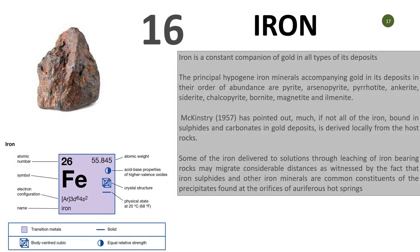Number sixteen is iron. Iron is everywhere and it is a must when you are prospecting for gold. There is a strong affinity between iron and gold-bearing deposits. Iron is a constant companion of gold in all types of deposits. The principal hypogene iron minerals accompanying gold in each deposit — in order of abundance — are pyrite, arsenopyrite, pyrrhotite, marcasite, chalcopyrite, bornite, and magnetite.